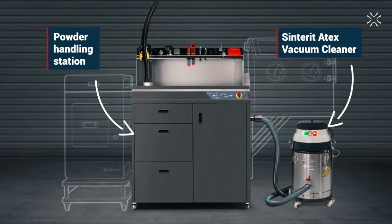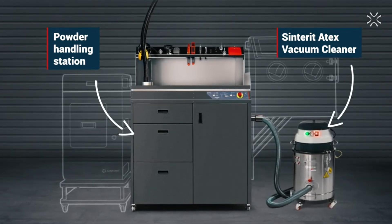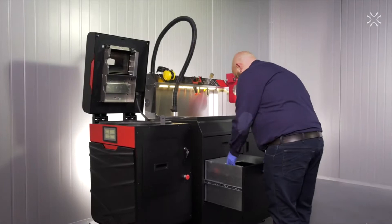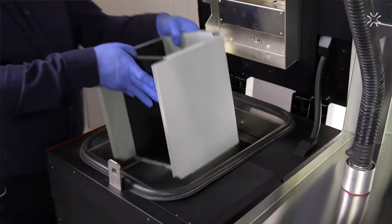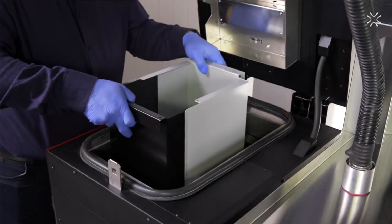The vacuum cleaner is a device that you can turn on and off, and the PHS will detect the suction and work in sync with it. Now take the cake out using the IO box from the second drawer. The short distance from the printer to the PHS prevents powder from spilling.